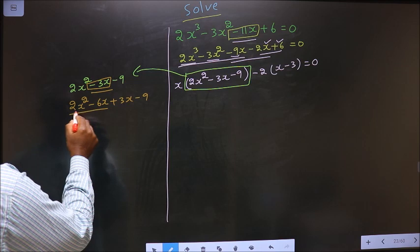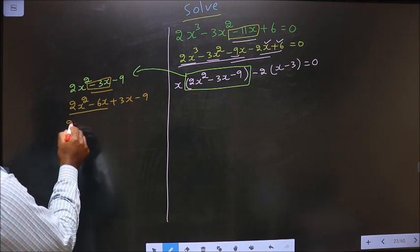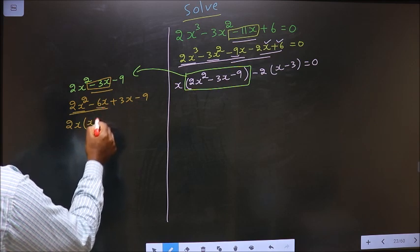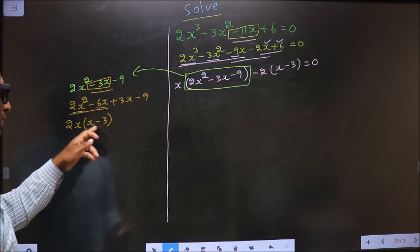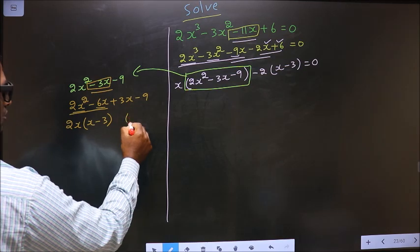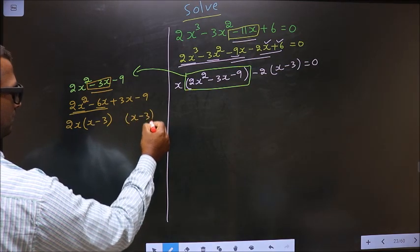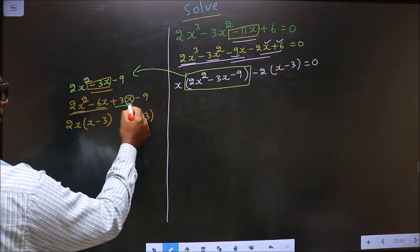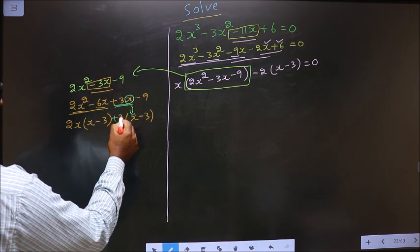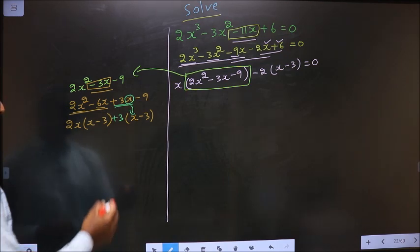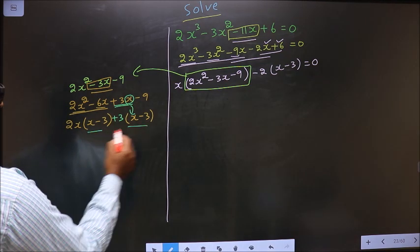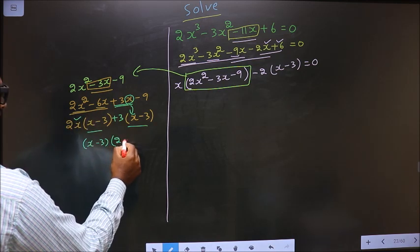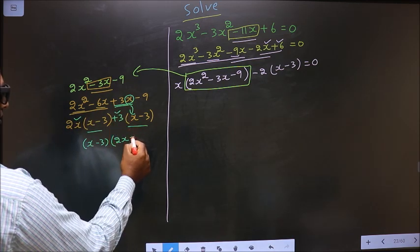Now what can be taken common from these two terms is 2x. So here you get x and here you get minus 3. Here also you should get the same thing. Now from this x has gone inside, so outside you are left with plus 3. Now you take out x minus 3 common. So here you have 2x and here you have plus 3.